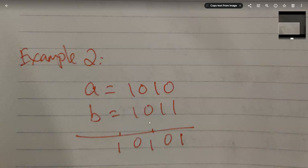For the second example, 1010 plus 1011: the first column is 0 plus 1 which is 1. Then 1 plus 1 is 2, so we have a carry of 1 and the column becomes 0. That carry plus the next column's 0 and 0 gives 1. The last column is 1 plus 1, which equals 2, so carry of 1 and 0 in that column. The final answer is 10101, carrying out that calculation in code next.